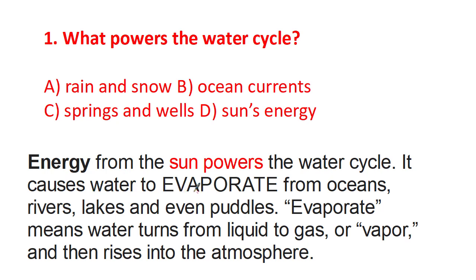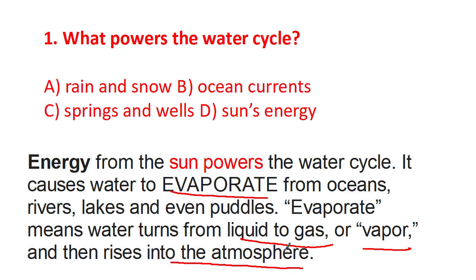Sun energy causes water to evaporate from oceans, rivers, lakes, and even small pieces of water. Evaporate means water turns from liquid to gas or water vapor, and then rises into the atmosphere. Gas rises up, changes into clouds. When temperature decreases, the water vapor in clouds changes into rain or snow, coming to the surface of Earth again.